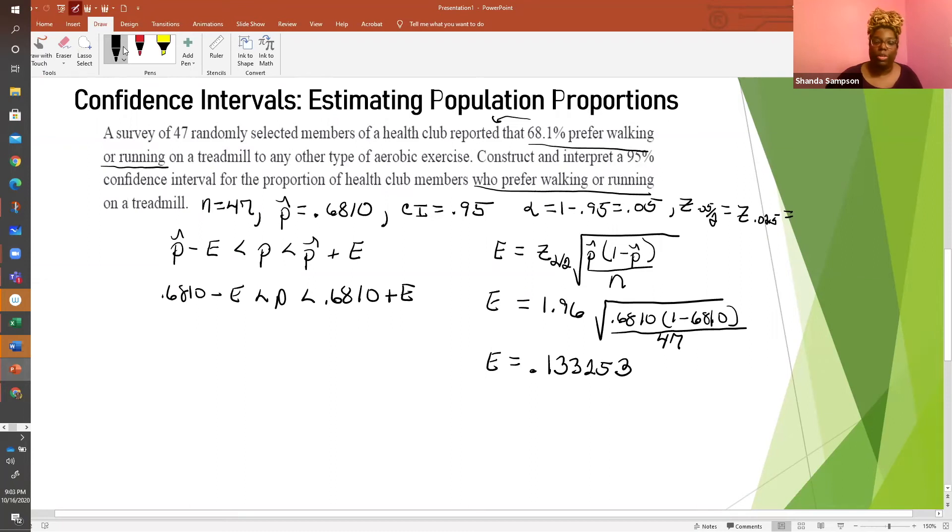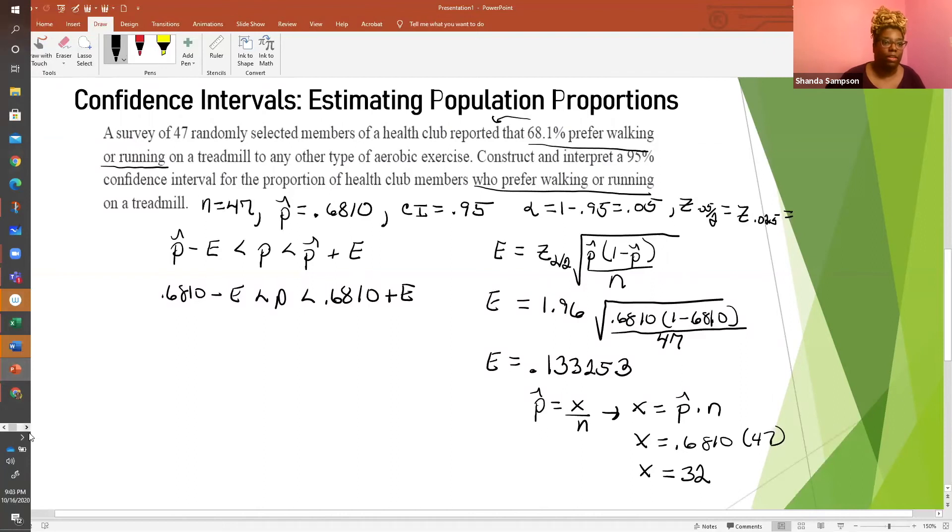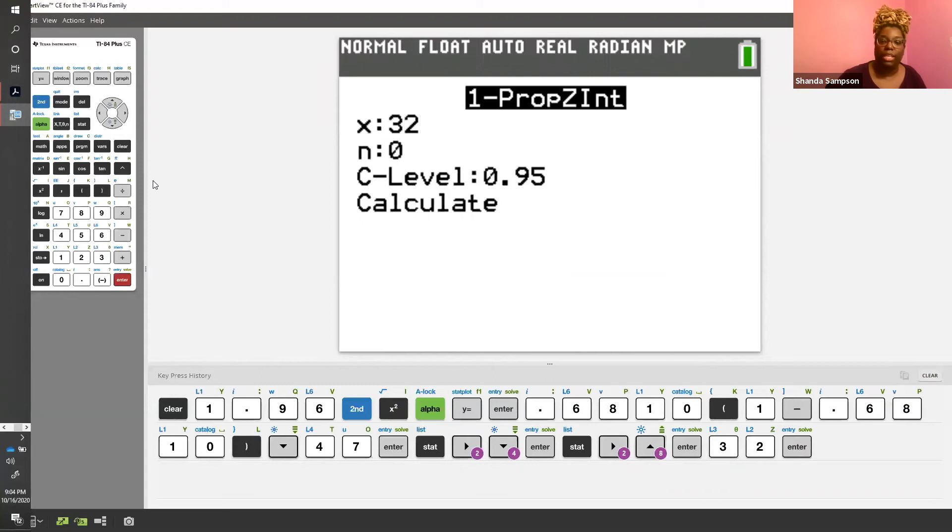So in order to get X, we know that P hat is equal to X over N. And to do a little bit of manipulation, we know that X is equal to P hat times N. We know P hat is equal to 0.6810, and N is equal to 47. And that's how we're going to get our X. 32.007, which we just round to 32. Your calculator will not accept N as a decimal form. It'll give you an error. So let's go back to our calculator.